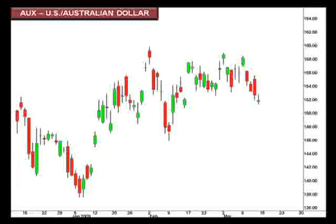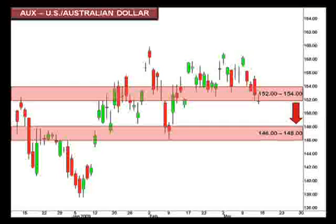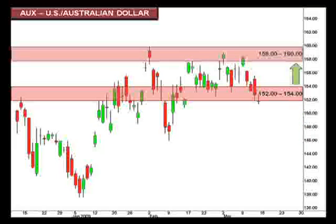The AUX — the U.S. versus the Australian dollar — pulled all the way back to that lower range of the 152-154 focal zone, which now opens the window for an even deeper retracement towards the 146-148 area. Should the AUX establish a support level within that 150-154 box, we would be looking for a retest of that 158-160 area.